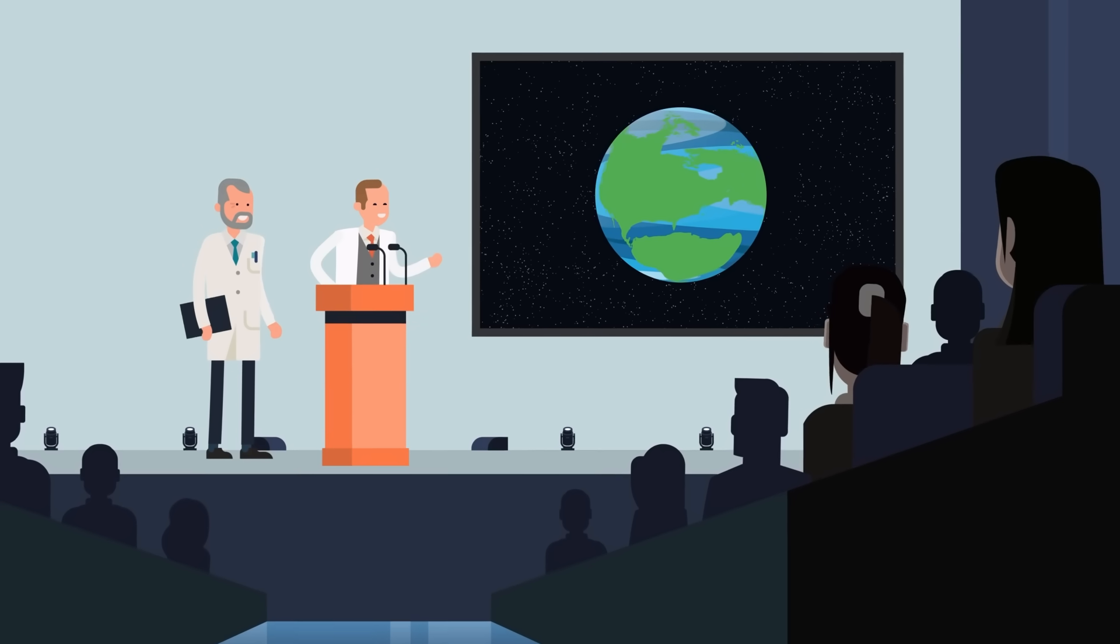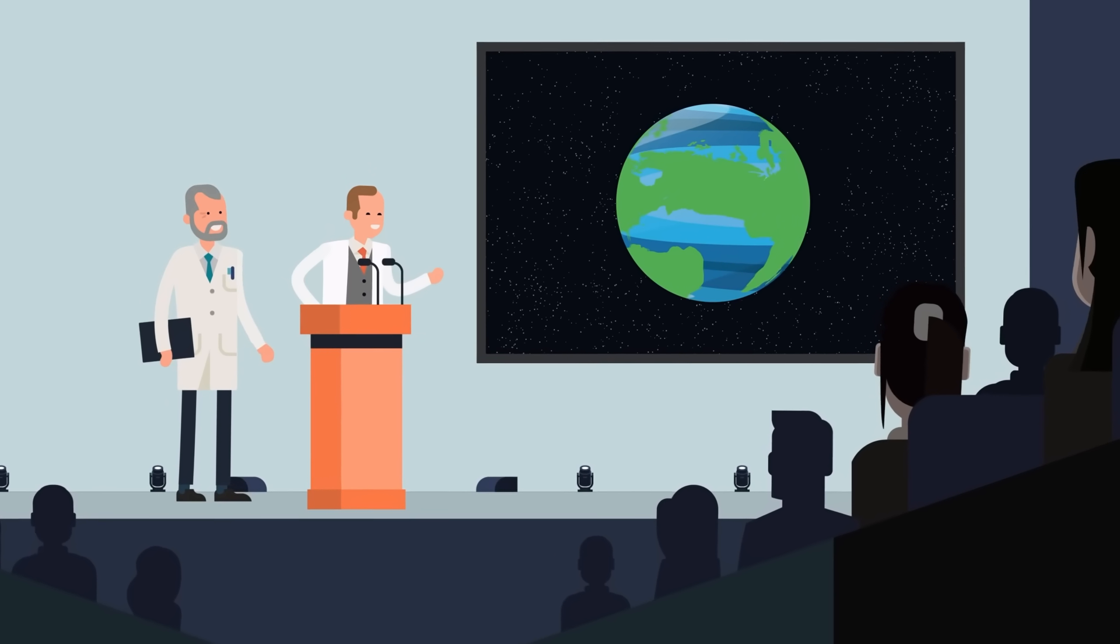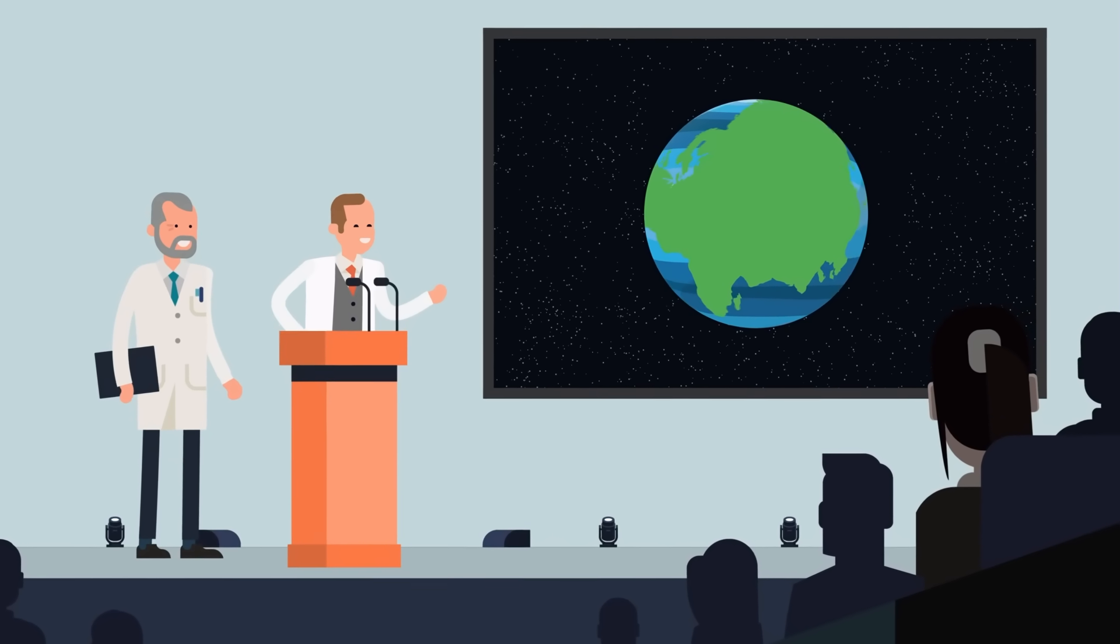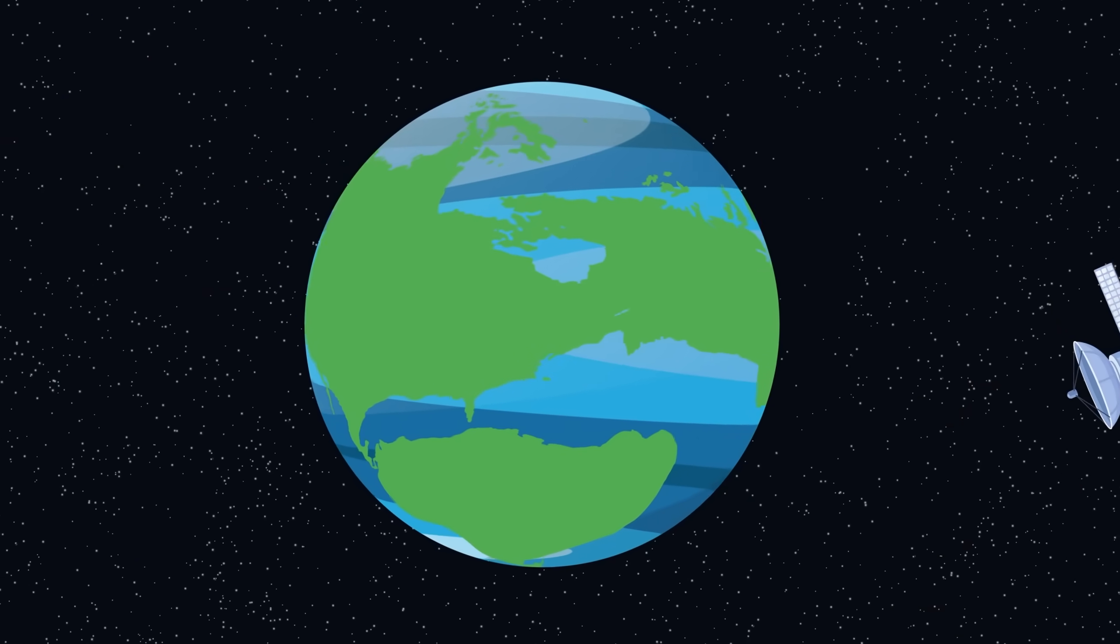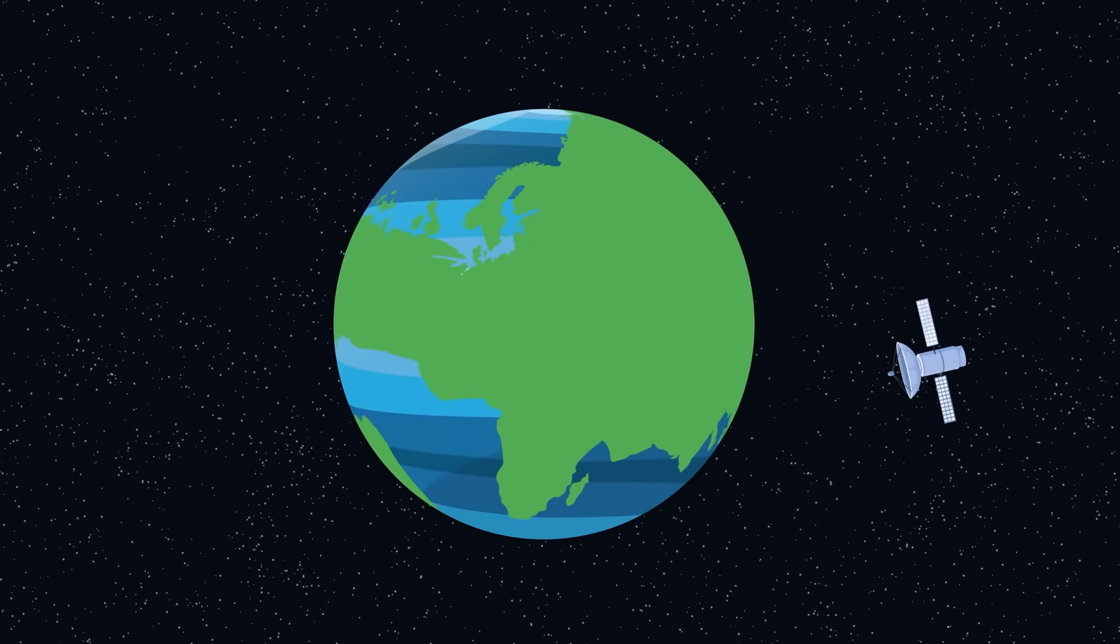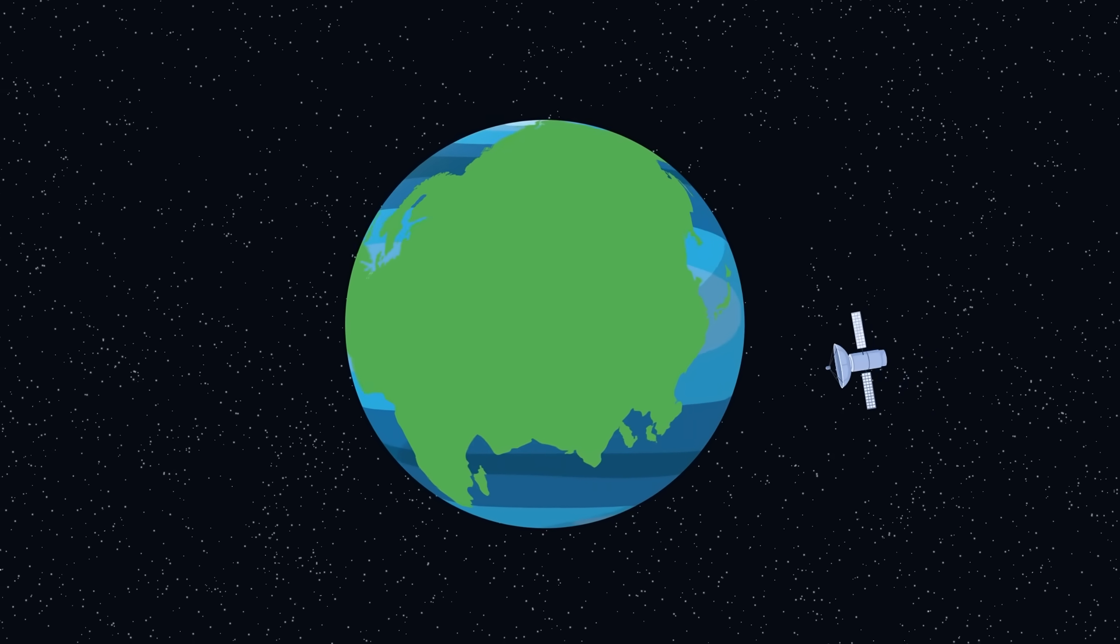The researchers determined other factors that could contribute to making a planet superhabitable, such as being a little bit larger than Earth, around 10%. These planets would have a longer-lasting radioactive decay at their center, providing heat, and their stronger gravity would allow the planet to maintain its atmosphere longer.